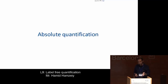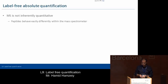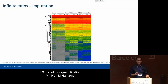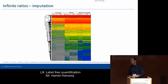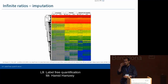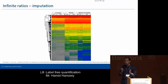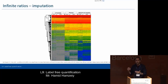Now I would like to go on with absolute quantification. [Question from audience]: Do you report the normalization factor? [Juergen]: No. So there is a normalization factor for each run — it gets implemented but it's not reported.